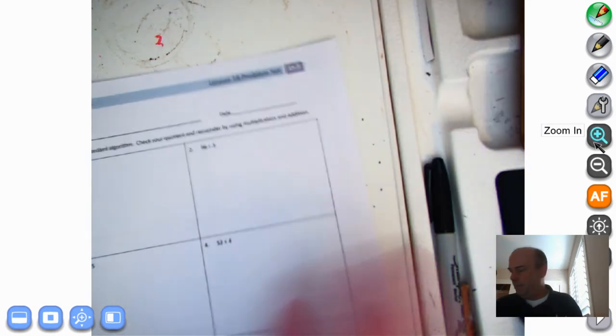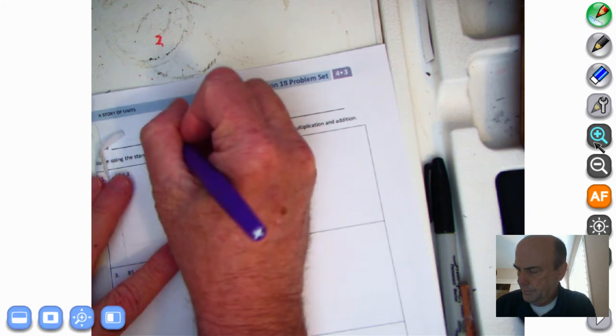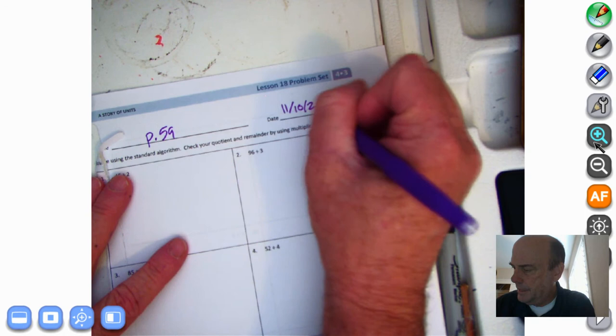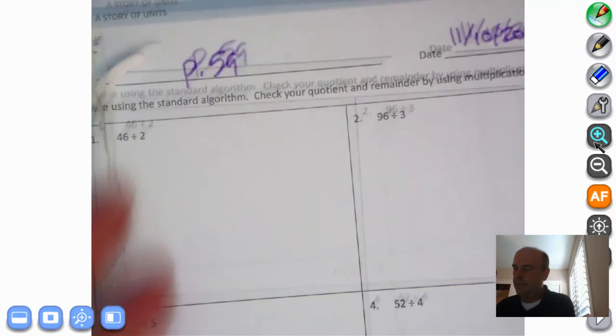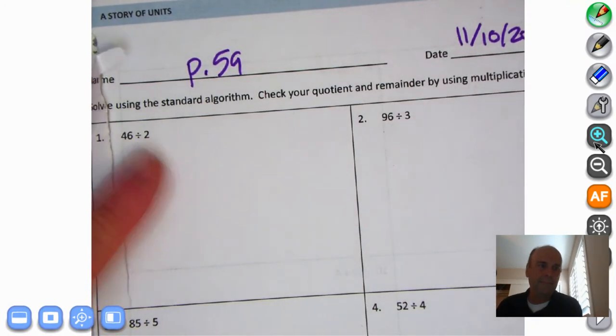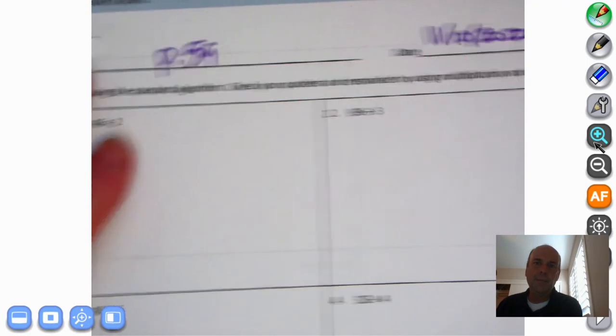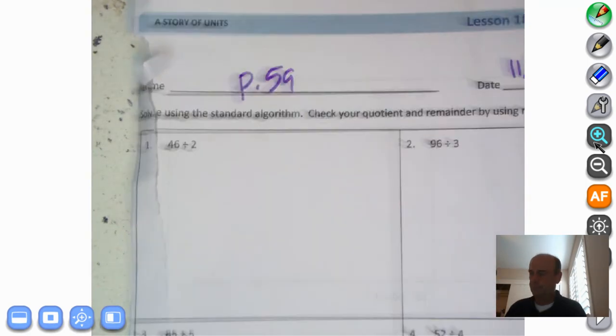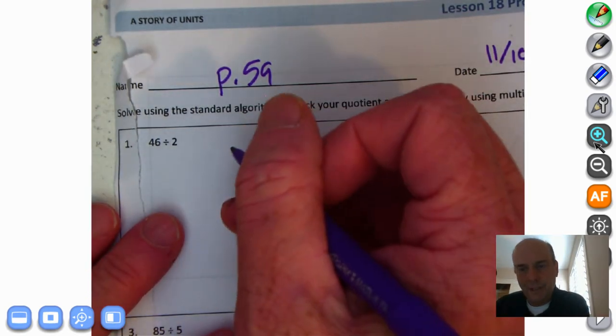And we're going to get on our problem set. We're going to page 59. Today's date is November 10th, 2020. Let's get right on this. It says solve using the standard algorithm, check your quotient and remainder by using multiplication and addition. So a lot going on here, don't you think? But believe me, with practice, you're going to get this.